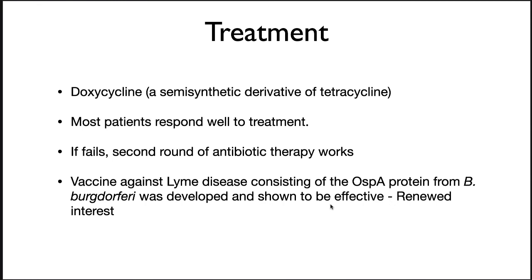Fortunately, there is a reasonably good treatment for Lyme disease. Doxycycline, which is a semi-synthetic derivative of tetracycline, is the preferred treatment. The drug is hydrophobic and can penetrate deep into tissues, eliminating the pathogen. Normally, with one or two rounds of treatment, infection can be cured. A component vaccine against Lyme disease consisting of the OspA protein from B. burgdorferi has been developed and found protective when given in three doses via intramuscular injection. Because the vaccine does not protect against other tick-borne illnesses, it did not gain wide acceptance, and the manufacturer discontinued production, presumably due to poor sales. Because of the increase in cases and the serious consequences of infection, there is renewed interest in making a vaccine.